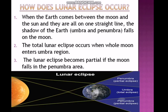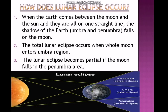In the partial Lunar Eclipse, part of the Moon enters the partial eclipse region and the other part is in the Umbra region. The Moon disappears partially, while the other part remains visible. This is called the partial Lunar Eclipse.